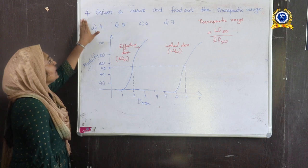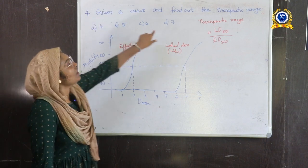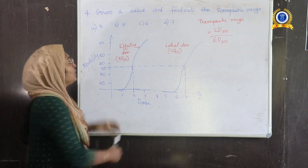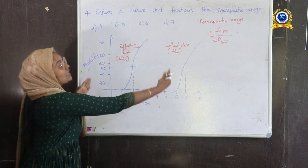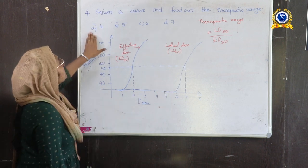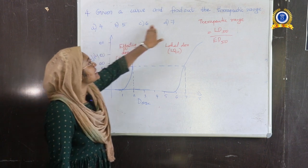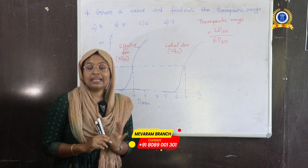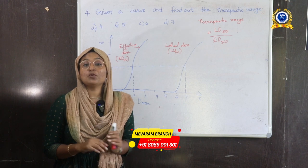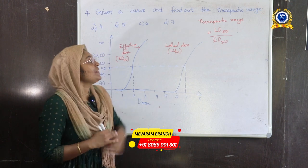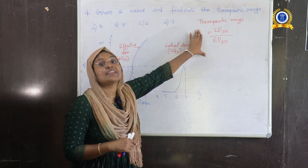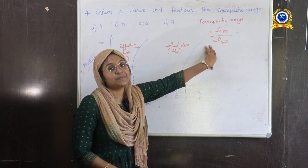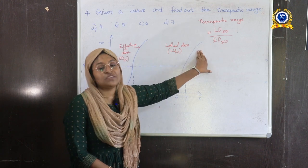Fourth question: A curve is given and we have to find the therapeutic range. The options are 4, 5, 6, and 7. Therapeutic range is the ratio of LD50 to ED50. LD50 is the lethal dose and ED50 is the effective dose.